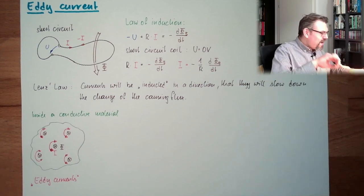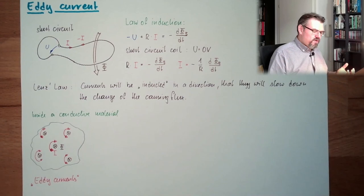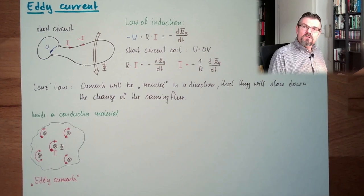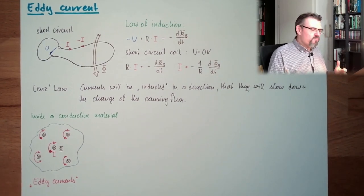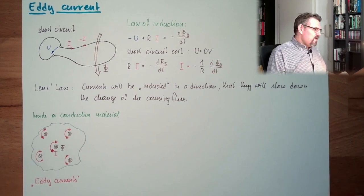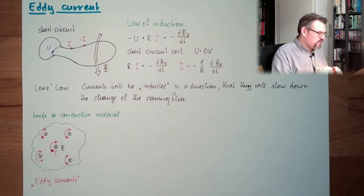So those eddy currents simply appear in a conductive material if there is a changing magnetic flux through this material. They will be inside. And now I have a current in a material, what will this cause? Heat. This thing is getting hot and the energy is coming from the magnetic field. When do I use this? Let's make first applications.